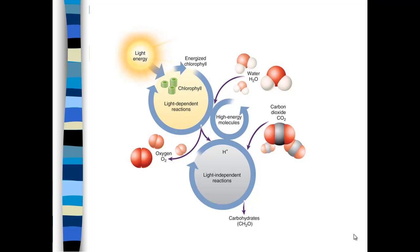Where we left off, we were talking about energy, and we defined energy as the ability to do work or to provide heat. This is just a schematic of how the chloroplast works in plants — it's a pretty busy slide, but I'll go ahead and break it down.